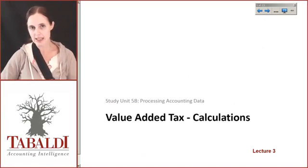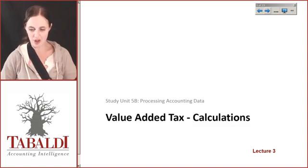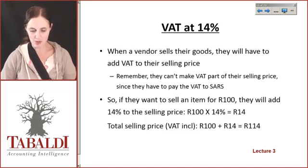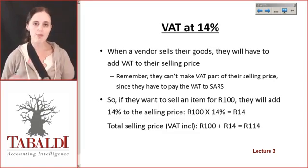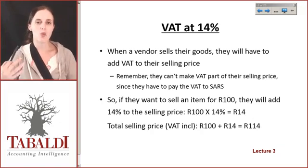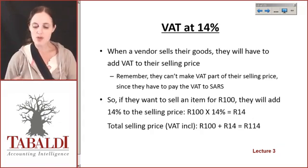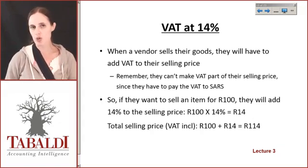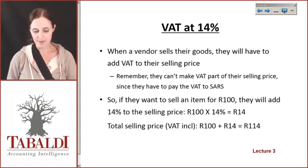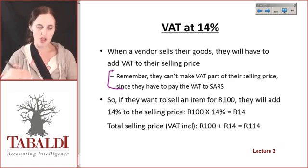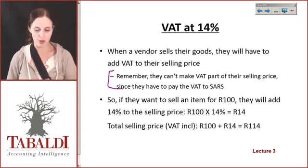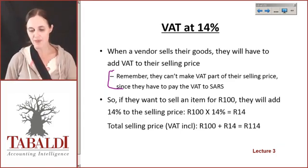Let's take a look at how we calculate specific VAT items and some of the complications we need to be aware of. VAT is at 14%, so when a vendor wants to sell their goods, if I want to sell my goods I have to add VAT to my selling price. Keep in mind that I can't just make VAT part of my selling price because I have to pay this over to the receiver.